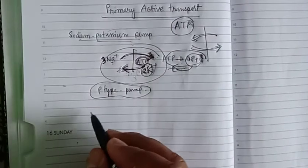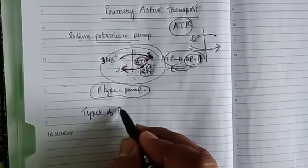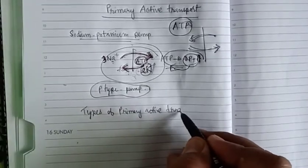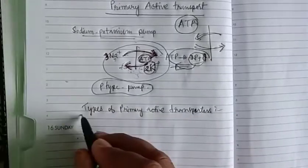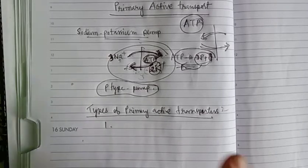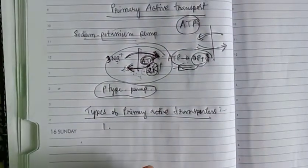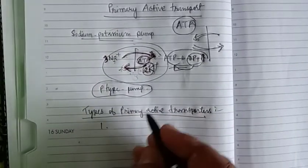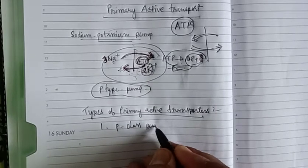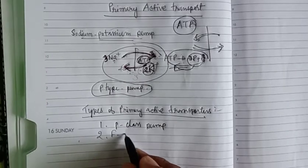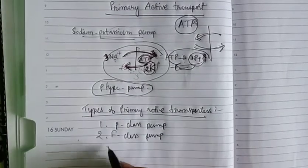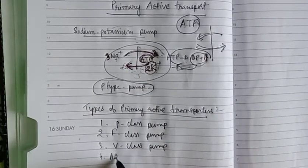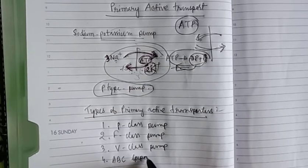Now let's look at the different types of primary active transporters. Based on transport mechanism as well as genetic and structural homology, there are four classes of ATP-dependent ion pumps: the P-class pump (such as the sodium-potassium pump), the F-class pump, the V-class pump, and the ABC superfamily.